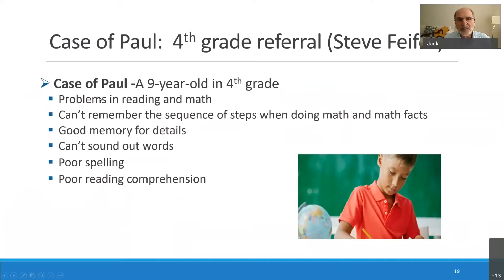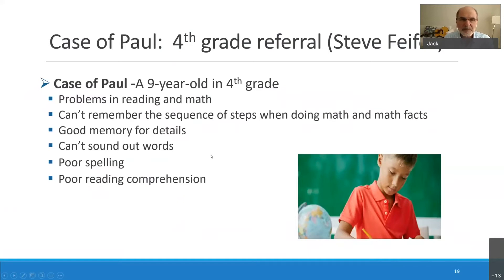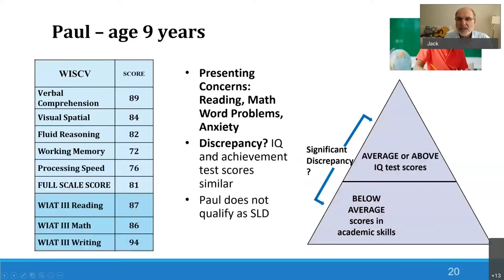This is Paul. Typical kind of problems in reading — can't remember sequences of steps, good memory for details, can't sound out words, poor spelling, good memory for reading comprehension. Look at his WISC scores and look at his achievement scores.